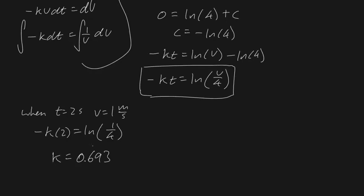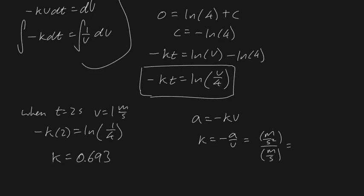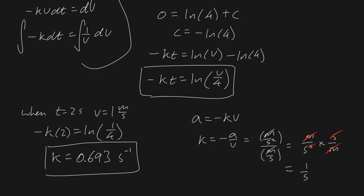We need to include units for k. From a = −kv, we get k = −a/v. Acceleration is in m/s² and velocity in m/s, so units of k are (m/s²)/(m/s) = 1/s, i.e., inverse seconds (s⁻¹). So k = 0.693 s⁻¹. Our fully simplified velocity-time equation is −0.693t = log(v/4).